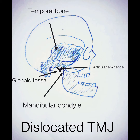The temporomandibular joint dislocation occurs when the mandibular condyle moves forward out of its functional position within the glenoid fossa and articular eminence into a position in front of these structures. This stretches the ligament and muscles, producing intense local orofacial pain.